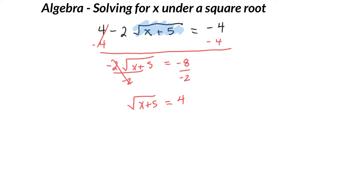I'm going to divide both sides by negative 2. Can I take the square root and get 4 as an answer? Sure I can. Can't get negative 4, but I can get 4. So I square both sides.